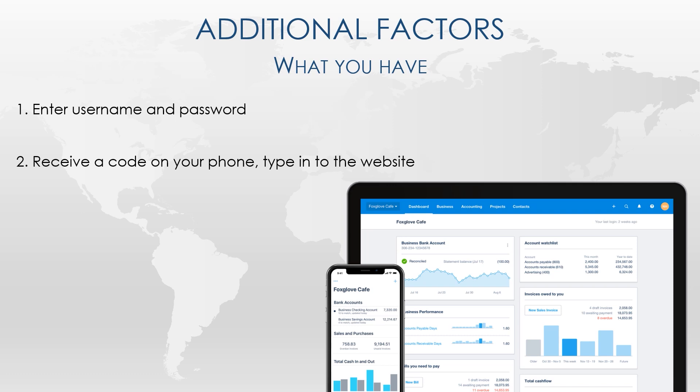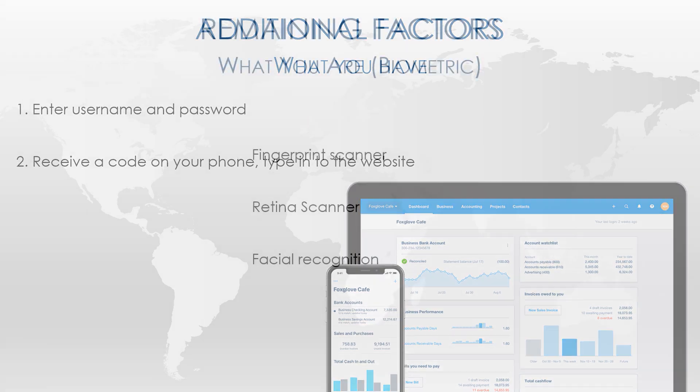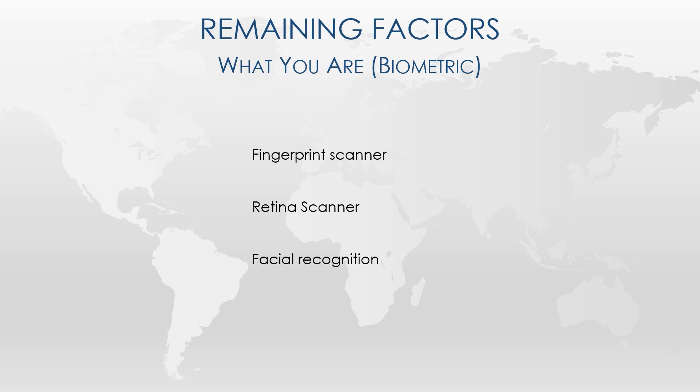We mentioned three main factors at the start of the video. Are you wondering what the 'what you are' factor is? It's basically using some sort of biosecurity — that means fingerprints, retina scans, that sort of thing. It's essentially using some part of you to prove you are who you say you are.